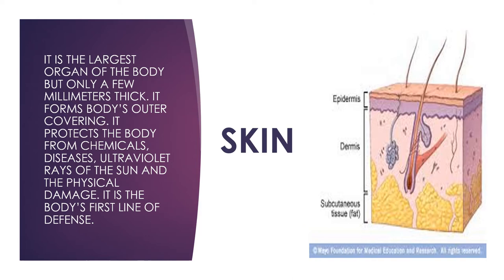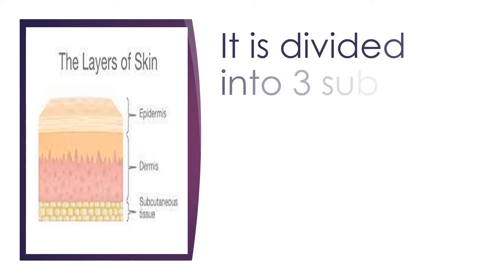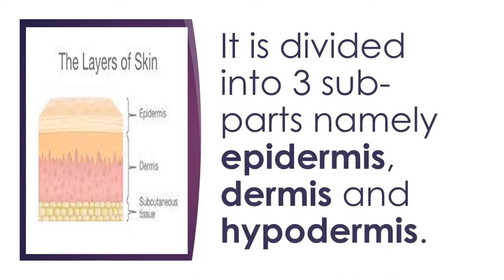The skin is composed of the outer layer called the epidermis, the middle layer called the dermis, and the innermost layer called the subcutaneous layer. The skin is divided into three parts namely epidermis, dermis, and hypodermis which is the subcutaneous tissue.